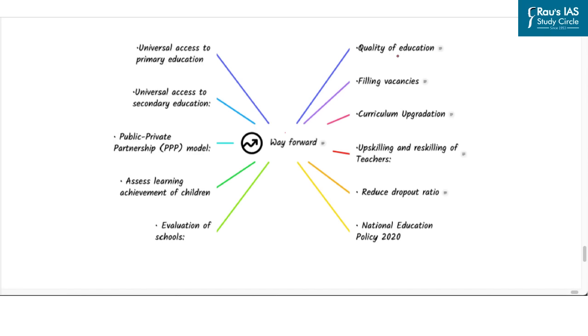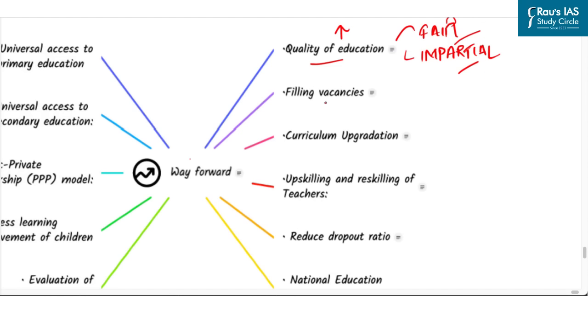Now having seen the issues in Indian education system, let's see few suggestions. The first is quality of education. It is necessary to take measures to uniformly raise the standard of education in India so that everyone has access to fair and impartial information and growth possibility. Second suggestion is to fill vacancies. Government must make sure that vacancies are filled by giving institutions more autonomy. The next suggestion is to upgrade curriculum. The curriculum was to be upgraded to meet the evolving and changing needs of the students.